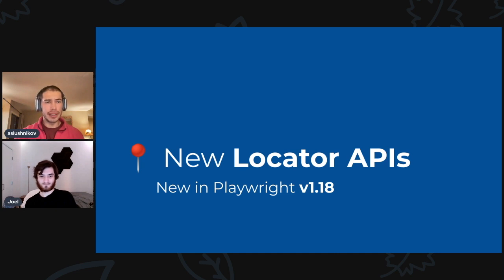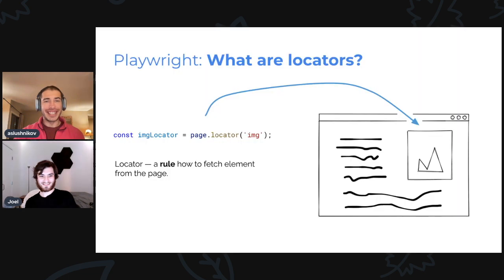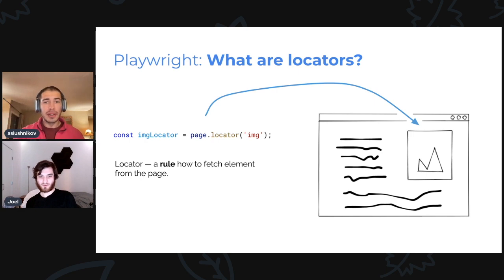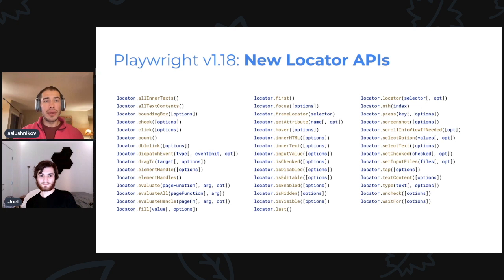So, Joel, do we know what a Locator is? I think so. It has something to do with elements? Yes. So, quick refresher — a Locator. You can consider a Locator to be a rule for how to fetch an element from the page. You usually create it with a page dot Locator call. And once you have it, it kind of points to a place in the page — pointing to that image, for example. As of today, you can do many different things with Locators: you can click, you can hover, you can do all these APIs you can see on screen. This is what you already have.